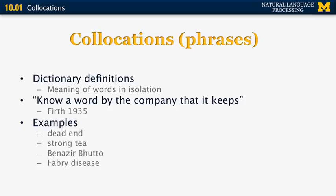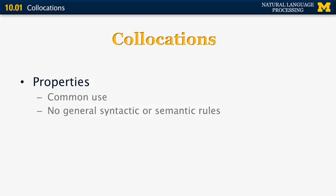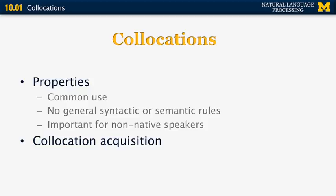Names of people and names of diseases are other examples of such phrases. Collocations have different properties: they're commonly used, not just one-time occurrences, and there are no general syntactic or semantic rules about them. They're very important for non-native speakers when learning a language fluently. Collocation acquisition from text is also very important for NLP applications like question answering and machine translation.